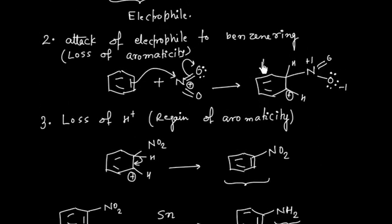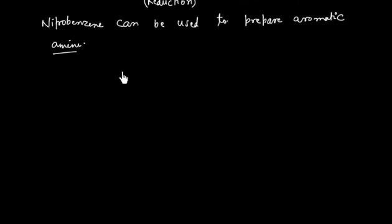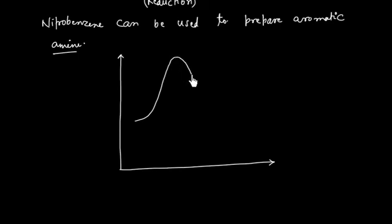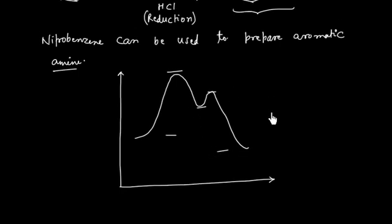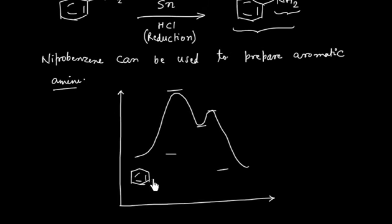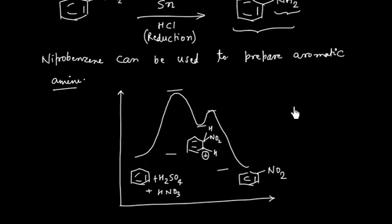In this case we have one intermediate. So if I draw the potential energy diagram for this reaction, since we have one intermediate, we will have two transition states. The first transition state will be having high energy, second transition state will be having low energy. So this is the reactant, benzene plus H2SO4 plus HNO3. Finally I have product, that is nitrobenzene. And this is the intermediate, that is we have NO2, hydrogen, and H plus. So this is the potential energy diagram. On x coordinate we have reaction progress.